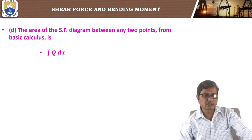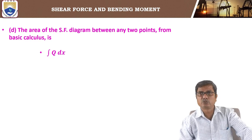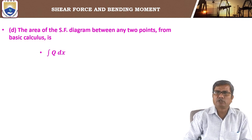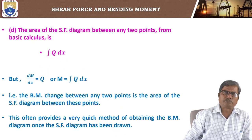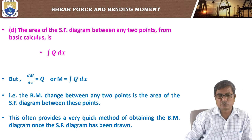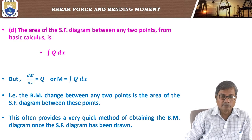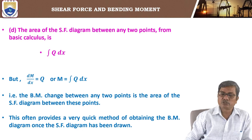The third conclusion: the area of the shear force diagram between any two points is the integral of Q dx. From the relation dM by dx equals Q, we have M equals integral of Q dx. Therefore, the bending moment change between any two points is the area of the shear force diagram between those two points.